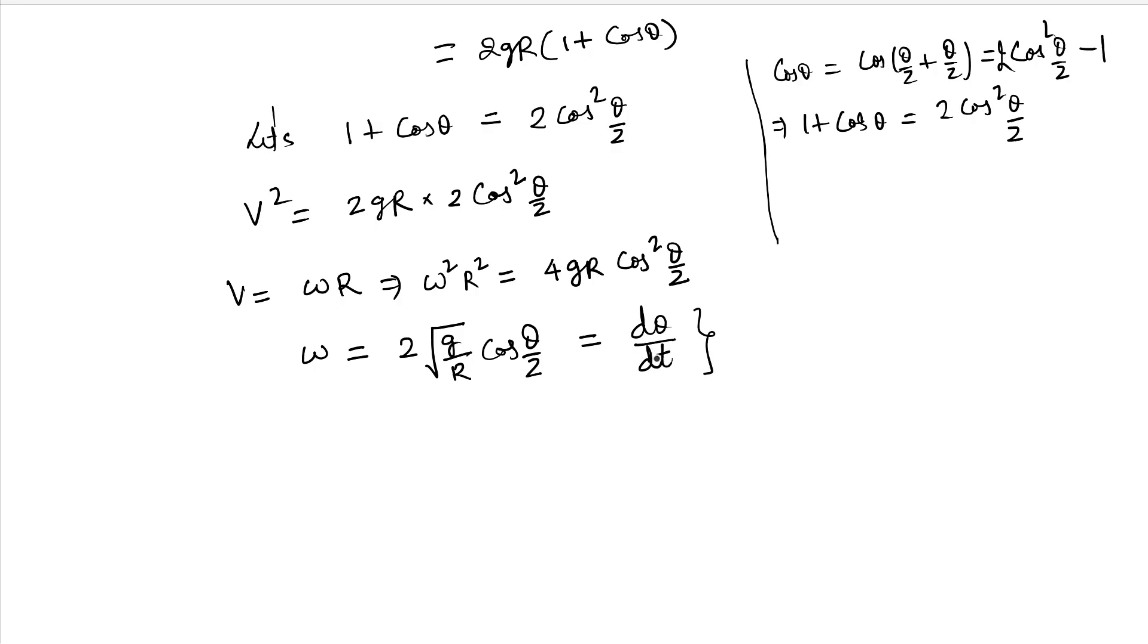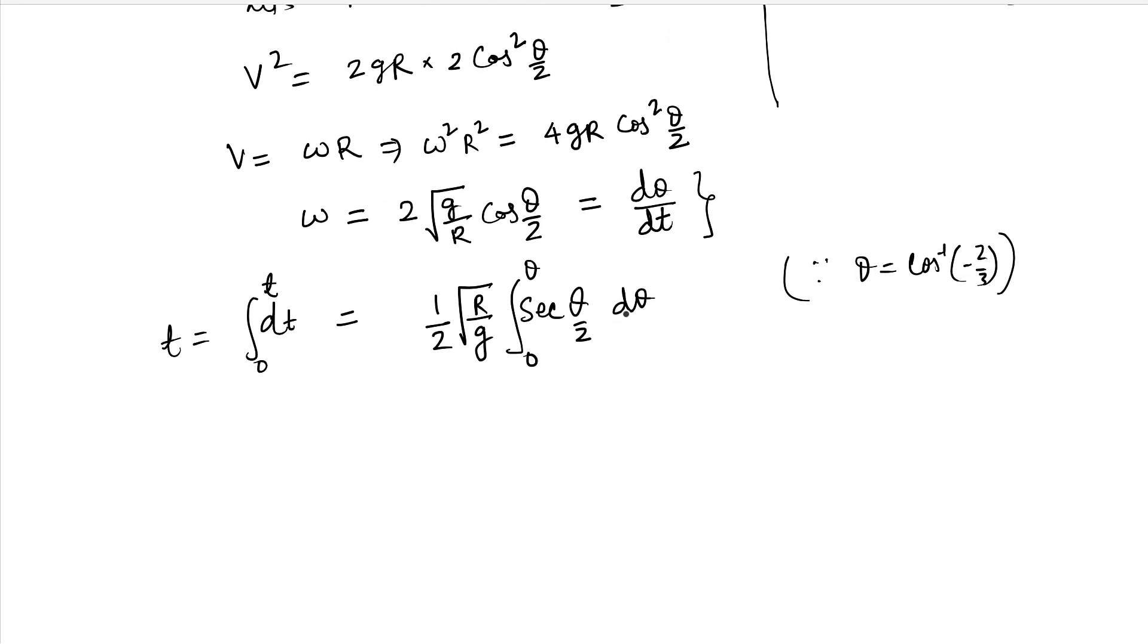So I can integrate this equation to get the time in terms of theta. If you take dt and integrate it, we get time from 0 to t equals 1 by 2 square root of (r by g) integral from 0 to theta of sec(theta by 2) d theta, where theta is cos inverse(minus 2 by 3). Now we can simply put d theta also in terms of d(theta by 2). So we need to multiply by 2 and divide by 2.